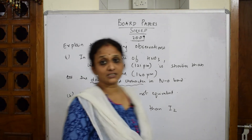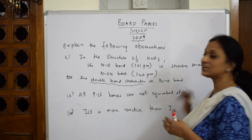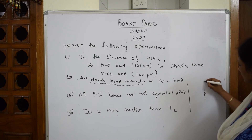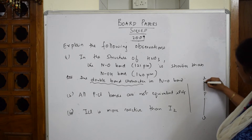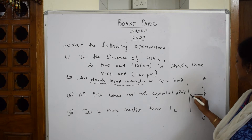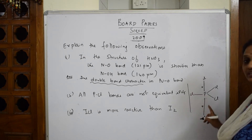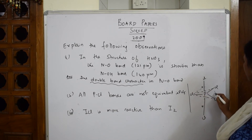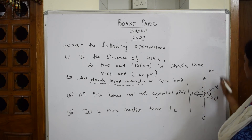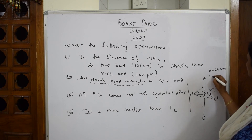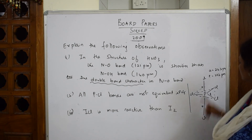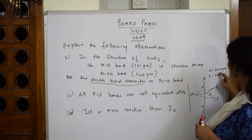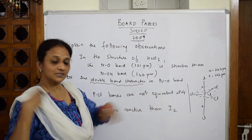Next: all PCl bonds are not equivalent in PCl₅. To draw the structure, phosphorus is in the center with five chlorines. One chlorine is above (longer/axial), one is below (also axial). The remaining three are distributed around the equator — these are called equatorial bonds. Axial bond length is 242 picometers and equatorial is 202 picometers. They're asking why it's different — in axial bonds there are electronic repulsions, and because of these repulsions the bond length has increased.